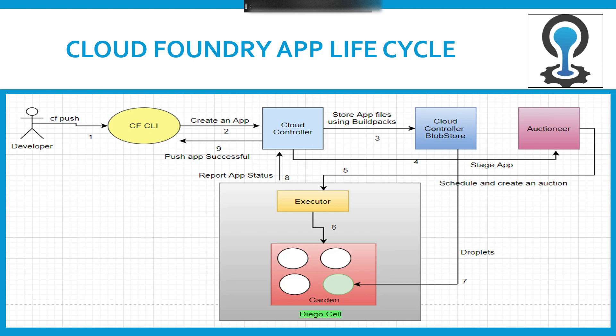Once all the application is packaged together, the Cloud Controller will store that package into the blob store. The blob store is a repository for large binary files. You might ask why we can't use GitHub — GitHub cannot easily maintain large binary files because it is designed only to store code. Once everything is stored in the blob store, the Cloud Controller sends a request to the auctioner to stage the application.